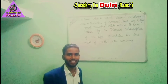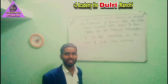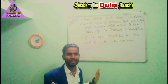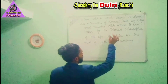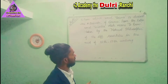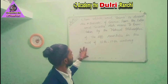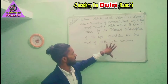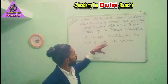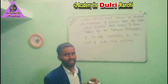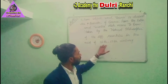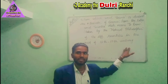Jigyasa ko utarne ke liye science ka teta - koi bhi cheez ko janane ki - yeh pehle kis ke dwara gaya tha? Natural philosophers of different countries. Vibhinn deshon ke natural philosophers - jo prakritik darshanik the - unke dwara liya gaya tha. Jo alag-alag deshon ke rahne wale the. Aur is word ko - yaani science word ko - scientia naamak shabd se kaam liya gaya tha - in the mid of 16th to 17th century.